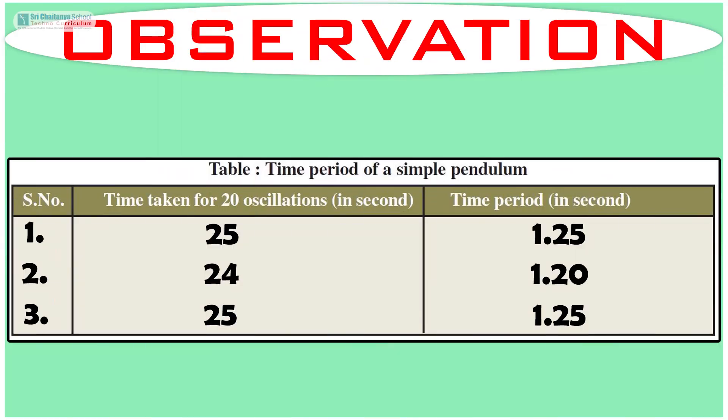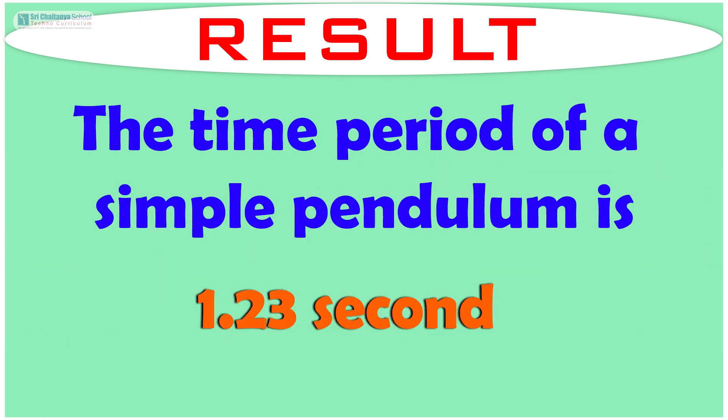And the third time taken for 20 oscillations is 25 seconds and the time period is 1.25 seconds. The time period of a simple pendulum is equal to 1.23 seconds.